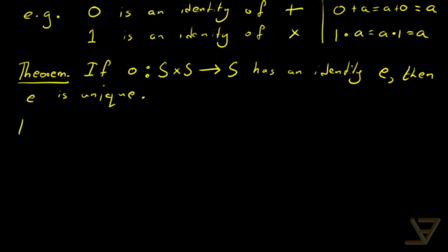Now how are we going to prove this? Well, we're going to start by supposing e1 and e2 are both identities of O. And our goal is to show that e1 equals e2. And we're going to use the properties of identities to do that.